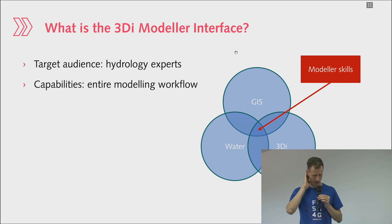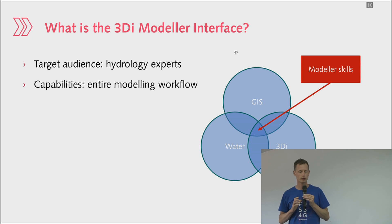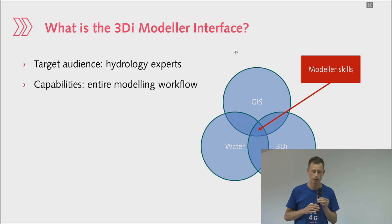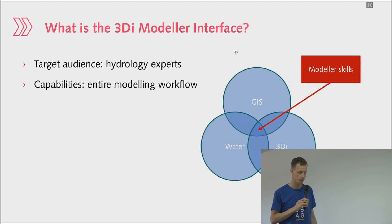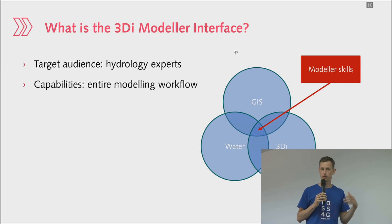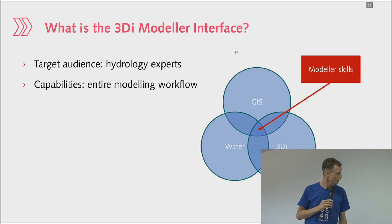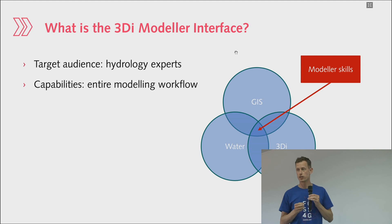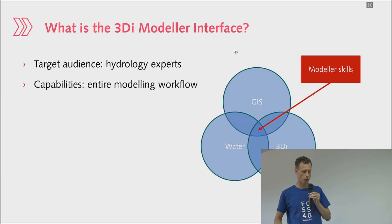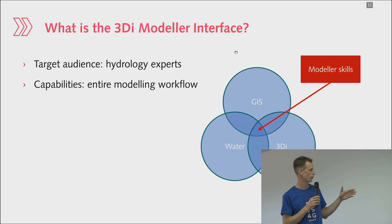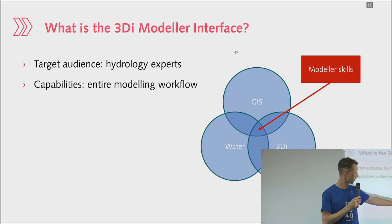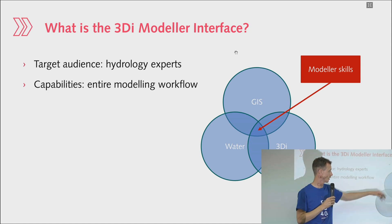When building software for hydrodynamic modeling, you have a very complex target audience, because users need a lot of skills: they need to know about water and hydrology and hydrodynamics, they need to understand how to process GIS data, and they need specific knowledge of how your modeling software works. Our experience is that users often have a strong background in water management but very limited GIS experience, or sometimes the other way around.